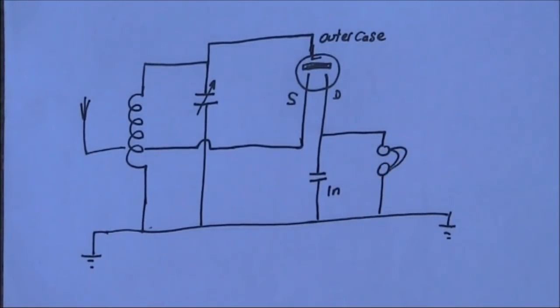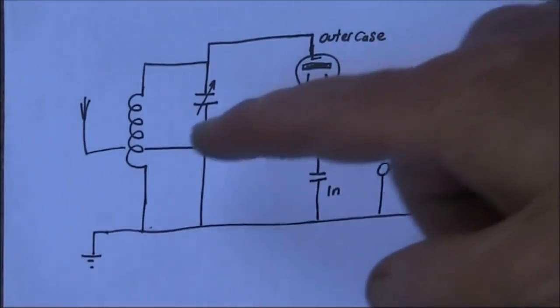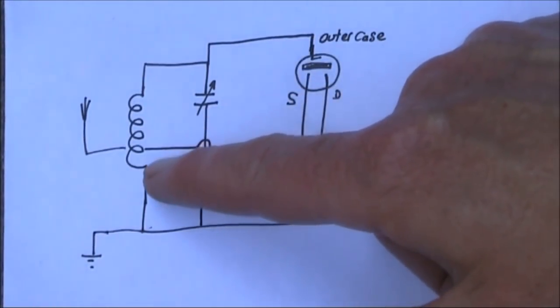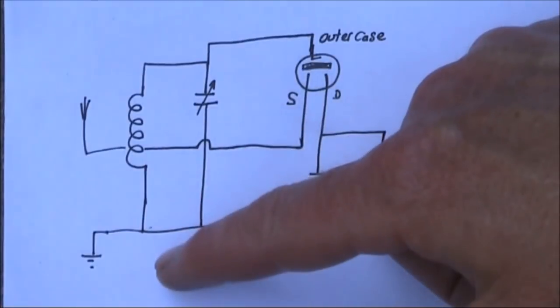With this set I could pick up three or four local stations at reasonable volume to hear in the headphones. If you want better selectivity then you need to move the tapping point down towards the earth side of the coil.